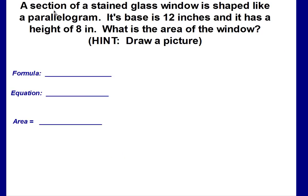A section of a stained glass window is shaped like a parallelogram. Its base is 12 inches and it has a height of 8 inches. What is the area? Pause the video and solve this on your own. Make sure you write out the formula, the equation, and the area. If you need to draw a picture of a parallelogram, go ahead. Then come back and check your answer.